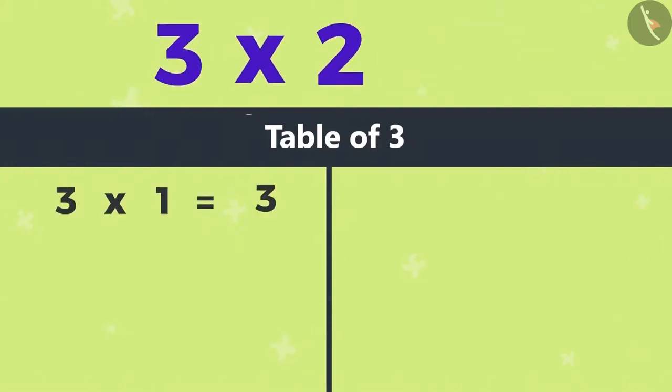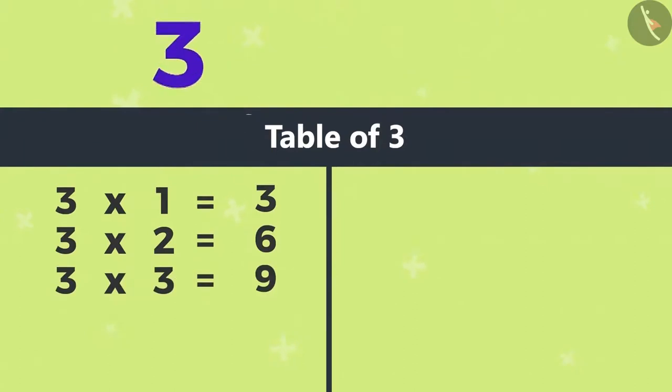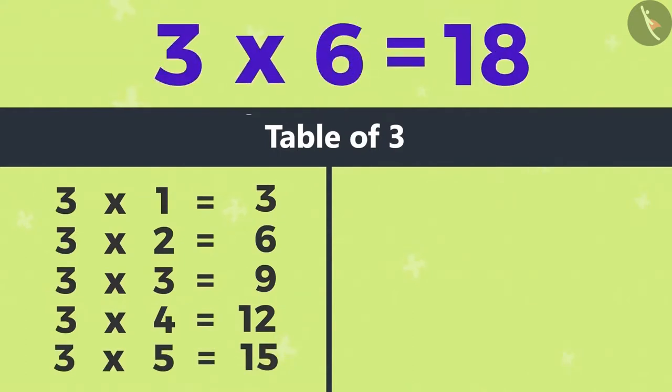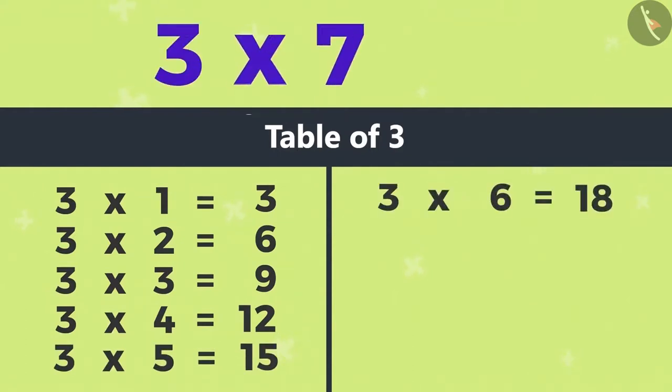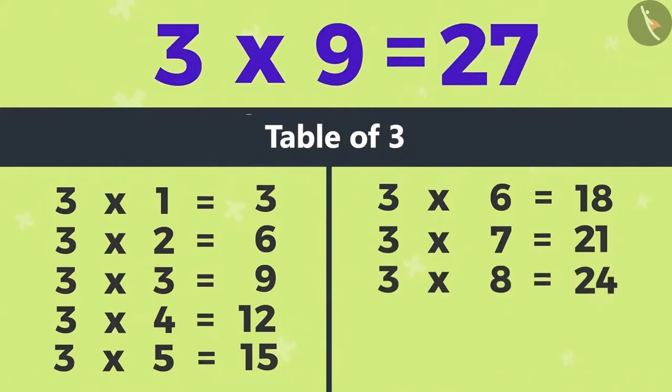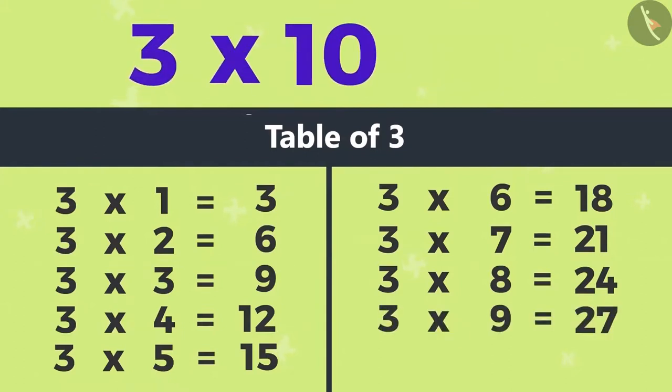3 ones are 3, 3 twos are 6, 3 threes are 9, 3 fours are 12, 3 fives are 15, 3 sixes are 18, 3 sevens are 21, 3 eights are 24, 3 nines are 27, 3 tens are 30.